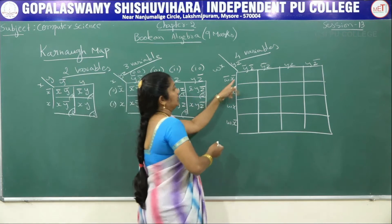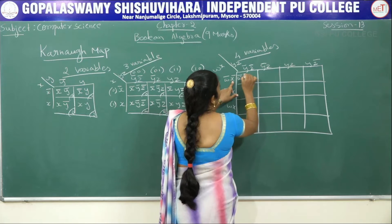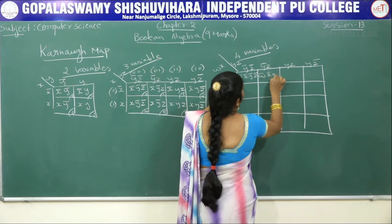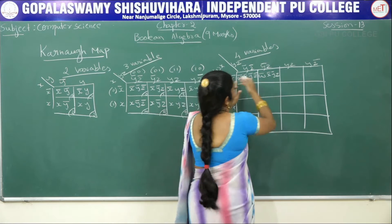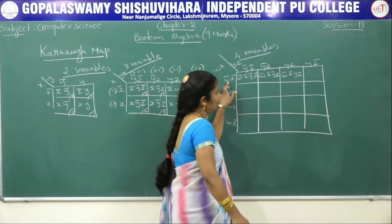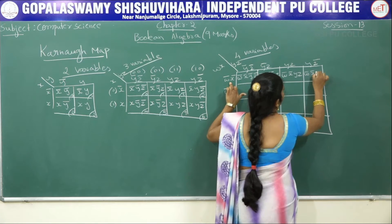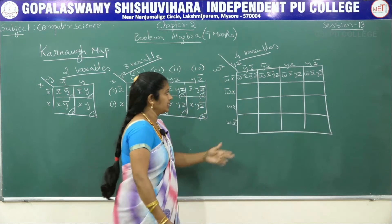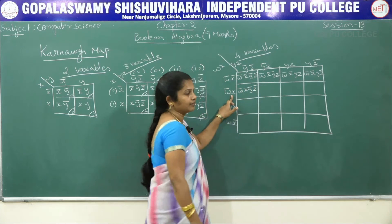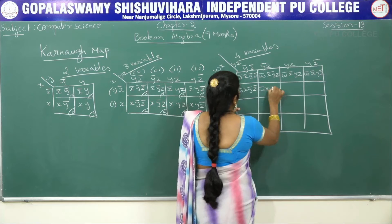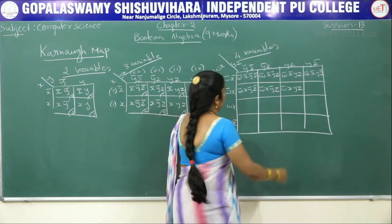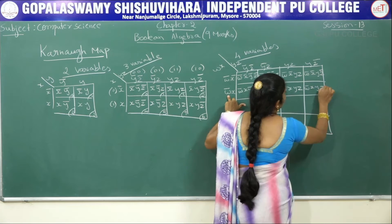Continuing the four-variable K-map cell values: W X Y-bar Z-bar, W X Y-bar Z, W X Y Z, W X Y Z-bar, then W X-bar Y-bar Z-bar, W X-bar Y-bar Z, W X-bar Y Z, W X-bar Y Z-bar. Note that the third row and third column take a single jump in the designation numbering.